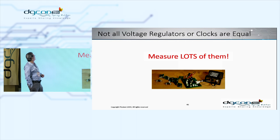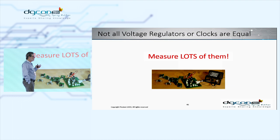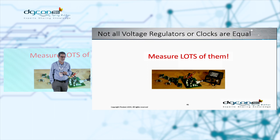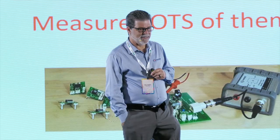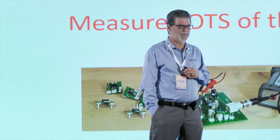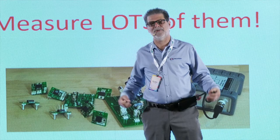Not all voltage regulators are equal — measure lots of them. We typically don't just choose a part. A lot of companies and smart people I work with make some odd decisions. I had a call from probably the largest CPU manufacturer in the world — they were having a problem with a power supply and asked me to come take a look. It was a voltage regulator with no compensation pin, no way to fix. I worked on it for a day and said, I don't think you're going to be able to make this power supply work. We're going to need to pick a different power supply.